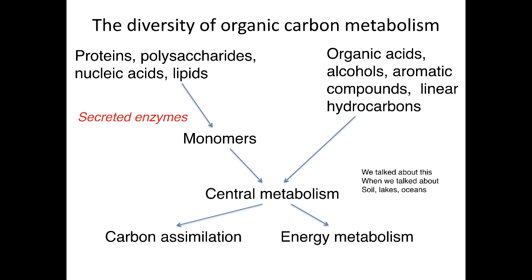That's it for these lectures. We've looked at a diversity of organic carbon metabolism. The big difference between microorganisms is their metabolism. You can begin with proteins, polysaccharides, nucleic acids, or lipids and break them down into monomers — we looked at lignin degradation and cellulose degradation. Those monomers then run through central metabolism and are used for carbon assimilation and energy metabolism. We also talked about how organic acids from fermentations, aromatic compounds, linear hydrocarbons, and lots of other compounds can be used, running through central metabolism to give you the same outcome.